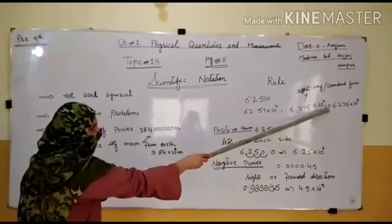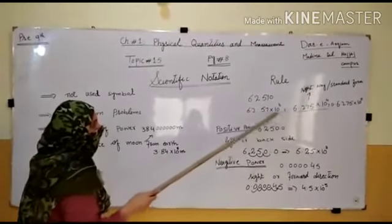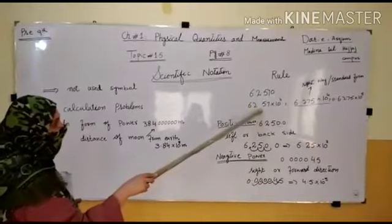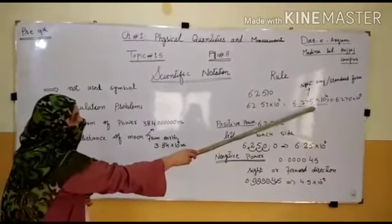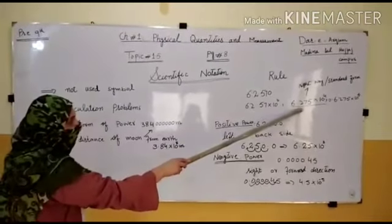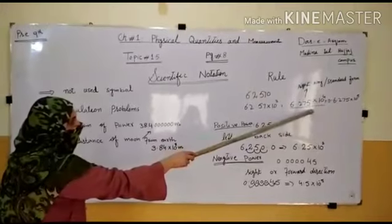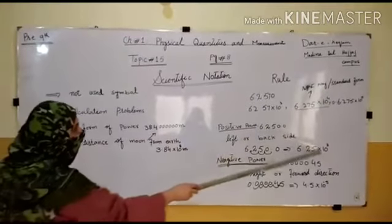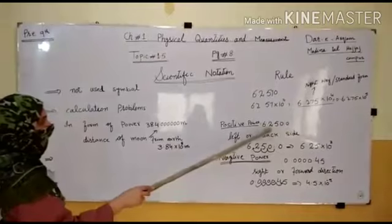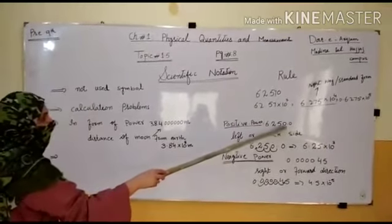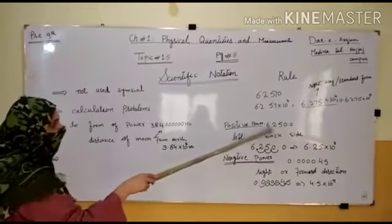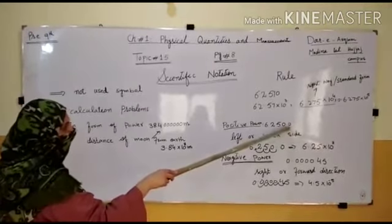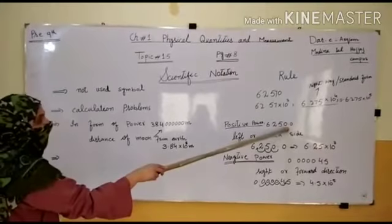Now, what happens with the decimal point? Look at the decimal line. We move the decimal point. If we move the decimal point, this changes the exponent. We'll move this point, which means the power becomes positive.